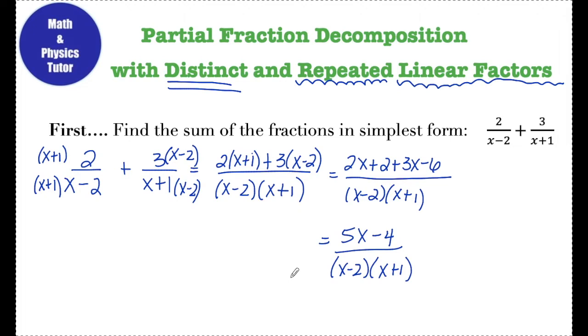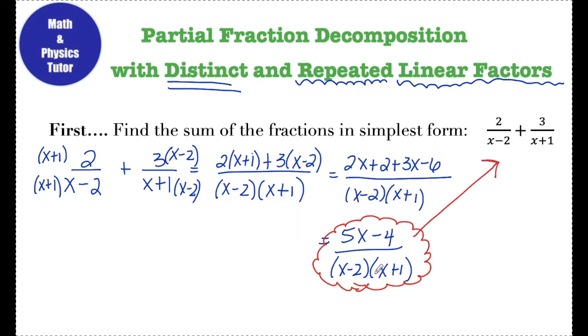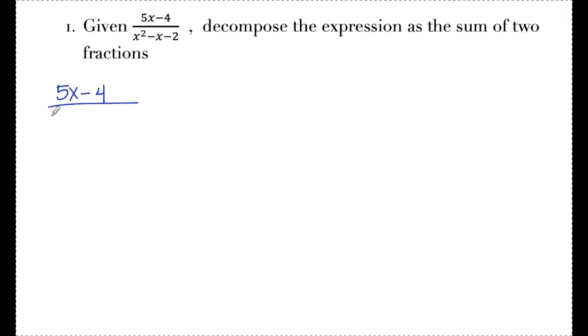For today's topic, partial fraction decomposition, I'll be given a rational expression like this and asked to start with the single fraction and decompose it into a sum of two fractions. Let's look at an example: given 5x minus 4 over x squared minus x minus 2, decompose the expression as the sum of two fractions. The first thing I always do is factor the denominator to see what kinds of factors there are.